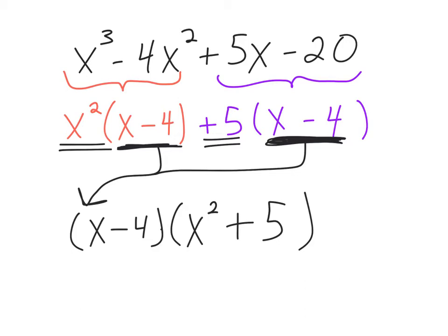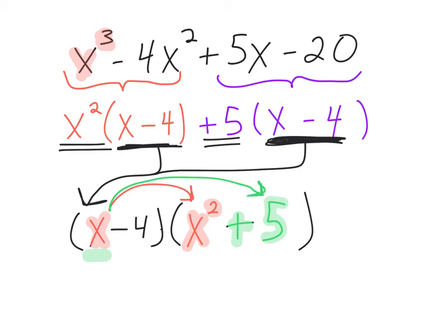Let's go ahead and do our check to see if we hit everything we were supposed to. This isn't necessarily part of the factoring process — this is the check to make sure I did it correctly. If I redistribute and go x squared times x, that gets me to my x cubed, which is looking good. Next, x times positive five gets me to the plus five x right there.